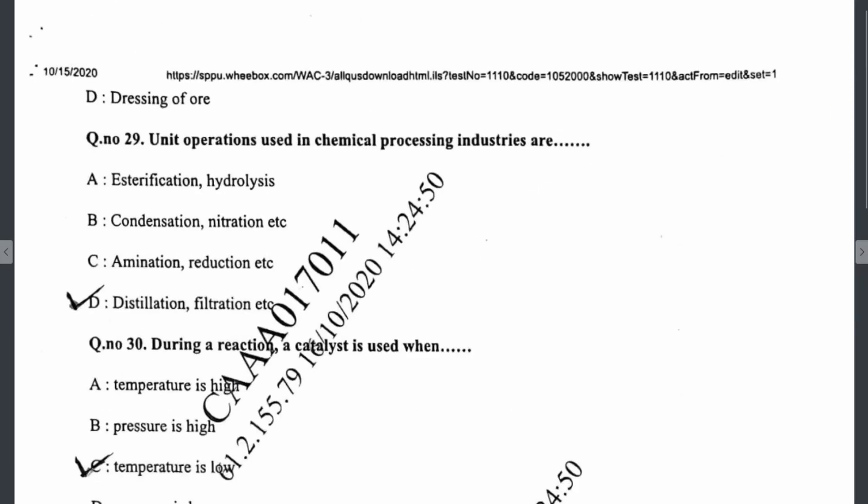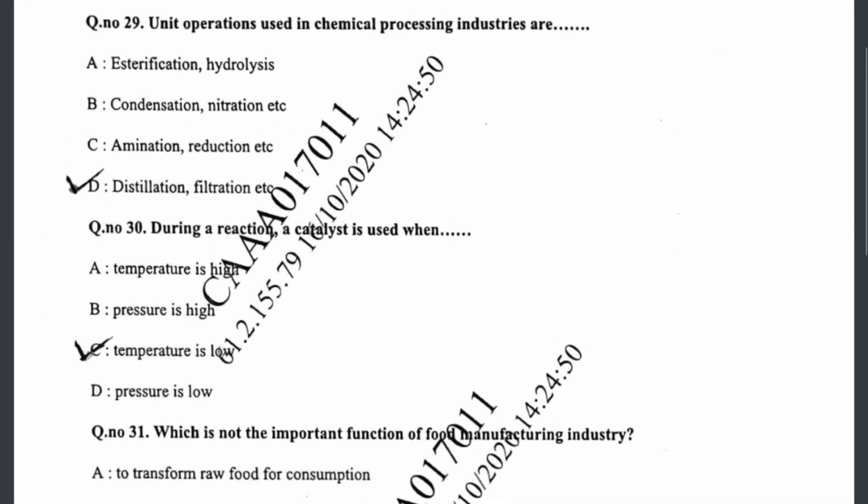Question twenty-nine: unit operations used in chemical processing industries include distillation, filtration, etc. — other options are unit processes, not unit operations. Question thirty: during a reaction, a catalyst is used when the temperature is low — that is the condition for the use of a catalyst.